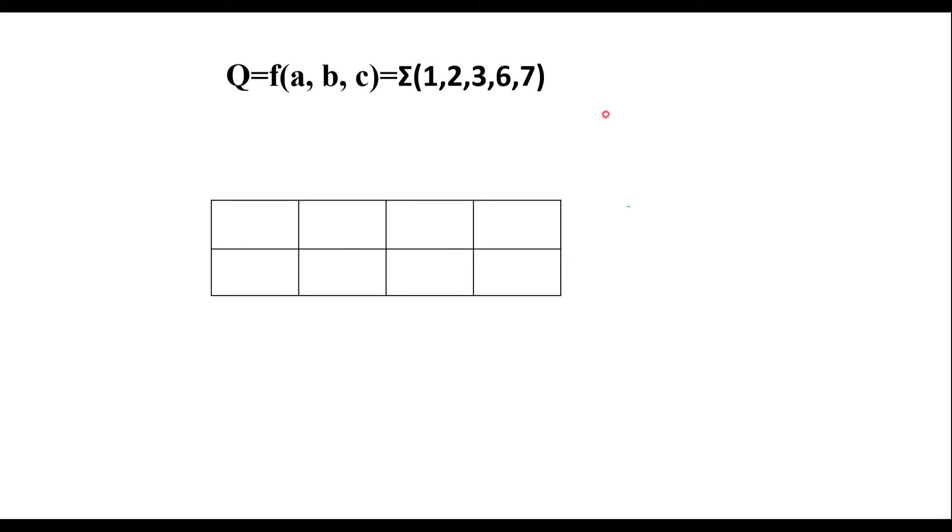As we know, here there are three variables. So, 2 power 3 will be equal to 8. So, we need 8 cells to simplify this using KMAP.